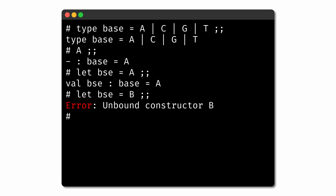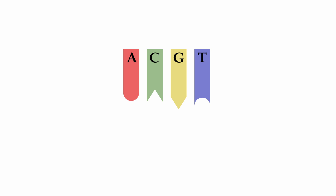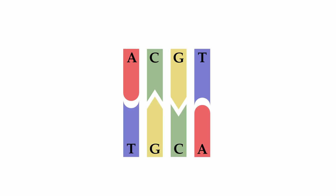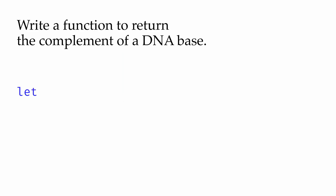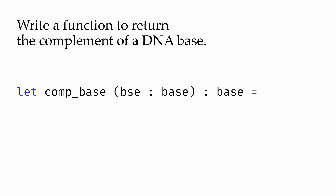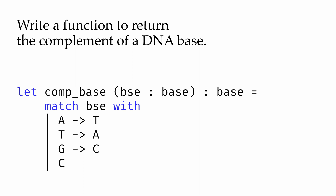Just like any other type, we can define functions that work with values of this type. For example, in DNA, every base has a complementary base: A and T are complements, and G and C are complements. So we can define a function to return the complement of a base. We first match the base, and we can use each of the four variants as a different pattern. Depending on which variant we match, we return the complement. So this type works great for representing a single DNA base.